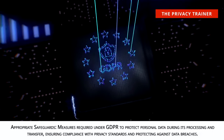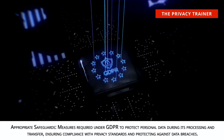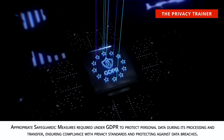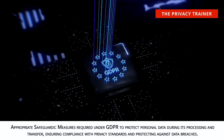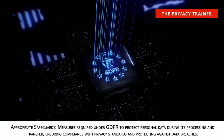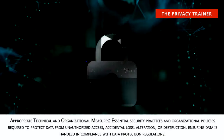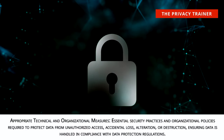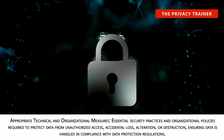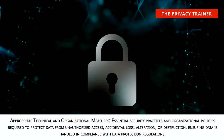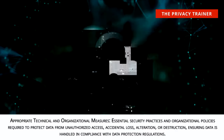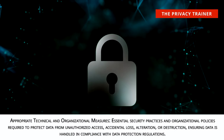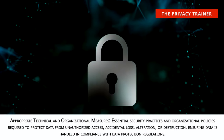Appropriate safeguards. Measures required under GDPR to protect personal data during its processing and transfer, ensuring compliance with privacy standards and protecting against data breaches. Appropriate technical and organizational measures. Essential security practices and organizational policies required to protect data from unauthorized access, accidental loss, alteration, or destruction, ensuring data is handled in compliance with data protection regulations.